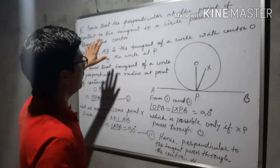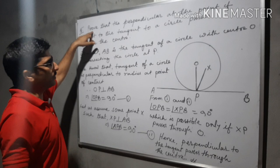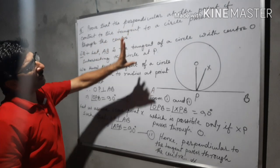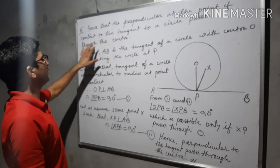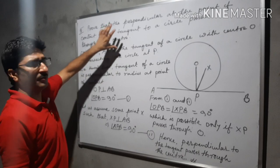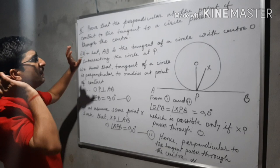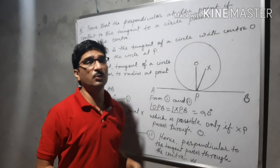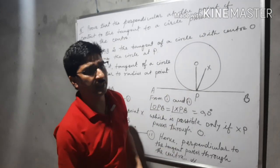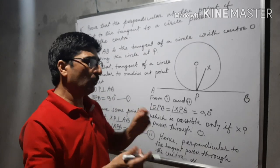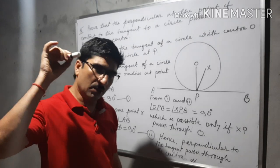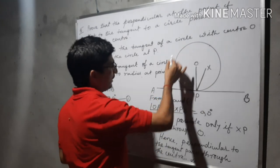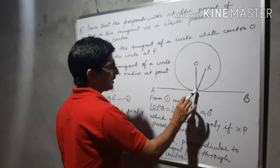Question number 5 is a bit different type of question. How we have to understand the question properly — the solution also I am going to explain. Prove that the perpendicular at the point of contact to the tangent to a circle passes through the center. In short, we have to prove that the perpendicular to the tangent passes through the center. We know that the radius is perpendicular to the tangent, but here our proof is we have to prove that the perpendicular passes through the center.